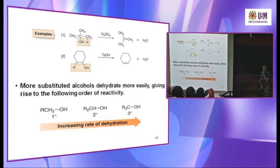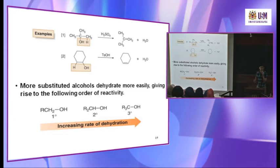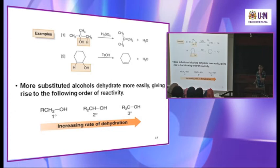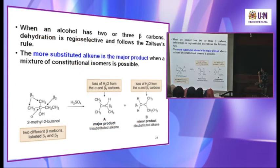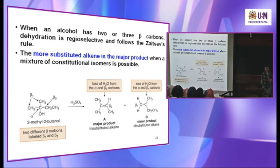Why does the rate increase? Because the first step involves protonation, and the tertiary alcohol can form the most stable carbocation. Primary alcohol may not form a carbocation, so you have E1 and E2 mechanisms depending on the alcohol used. Tertiary alcohol follows E1 because it involves only a unimolecular rate-determining step. If the alcohol has two or three different beta carbons, it tends to form the alkene with more substituents, following Zaitsev's rule.